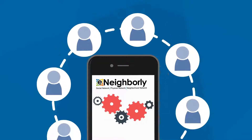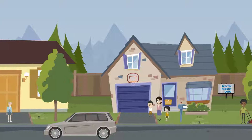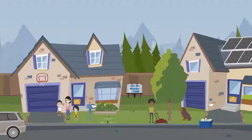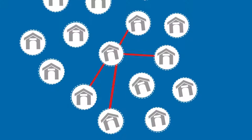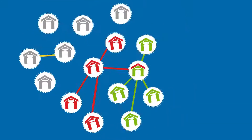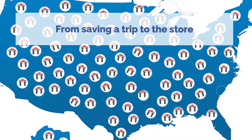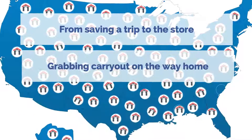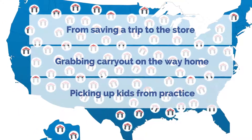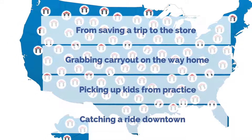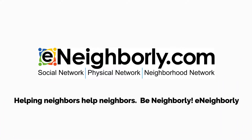eNeighborly is a mobile technology platform that facilitates communication and cooperation between neighbors. Through eNeighborly, each participant establishes their own private network to share in normal neighborly efficiencies — from saving a trip to the store, to grabbing carryout on the way home, to picking up kids from practice or catching a ride downtown. Helping neighbors help neighbors. Be neighborly.